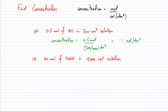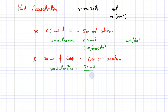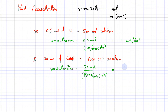In question (b), I have 20 moles of NaOH in 15,000 cm³. Concentration = 20 / (15000/1000) = 20 / 15 ≈ 1.33 mol/dm³. Comparing the two: HCl is more dilute at 1 mol/dm³, while NaOH has a higher concentration of 1.33 mol/dm³.